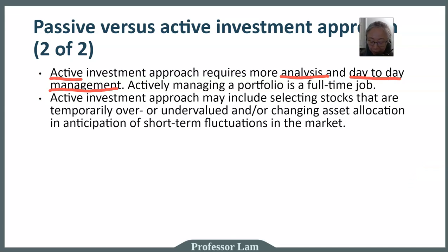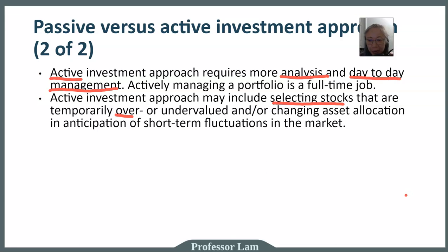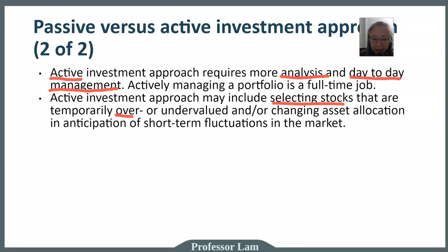An active investment approach may include choosing individual stocks — for example, identifying stocks that are temporarily overvalued or undervalued. An overvalued stock is one where the current price is higher than what you think the true correct price is. An undervalued stock means the current price is less than the true value. Determining the true value of a stock is definitely beyond the scope of this class. If you are interested, I recommend reading an investment-focused book or taking an investment course. Another active approach is to change your asset allocation in anticipation of short-term market fluctuations.